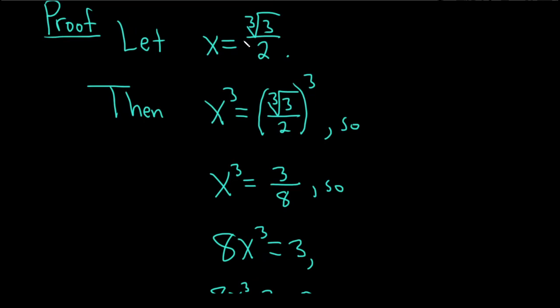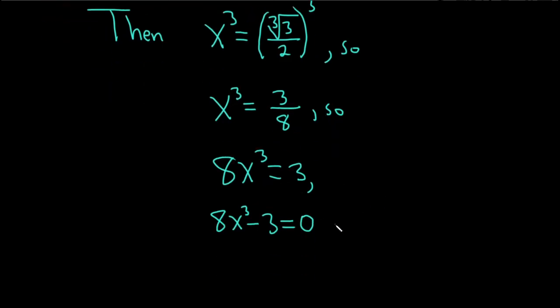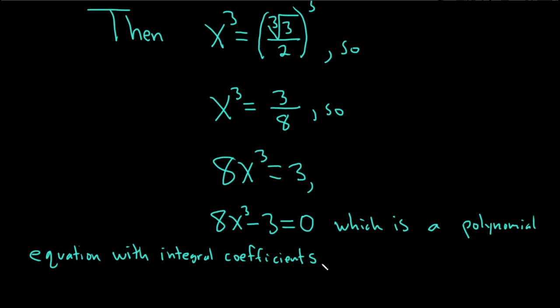And our value of x is a solution by construction. So let me just go ahead and say that. Which is a polynomial equation with integral coefficients, and it has x equals the cube root of 3 over 2 as a solution.